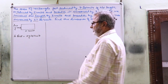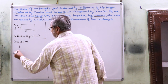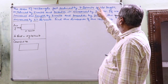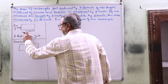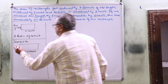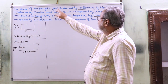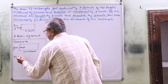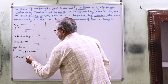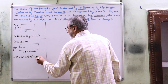Now, Case 1 according to the question: the area of the rectangle gets reduced by 9 square units if its length is reduced by 5 — so length becomes x minus 5 — and breadth is increased by 3 units, so breadth becomes y plus 3. The area gets reduced by 9 square units, so according to the question, area equals (x minus 5) multiplied with (y plus 3), which equals xy minus 9.